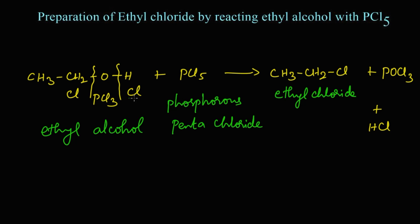And the remaining PCl3 and this oxygen will leave as phosphoryl chloride. This is one of the methods of preparation of haloalkanes from ethyl alcohol. Thank you.